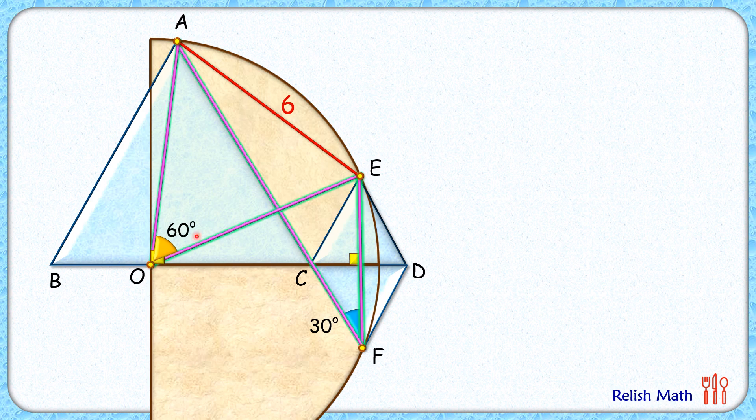Now OE and OA, these are the radius of this semicircle and thus they will be equal in length. And thus the opposite angles will also be equal. By angle sum property, these angles will be 60 degrees each.